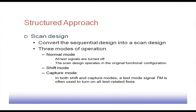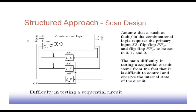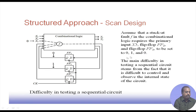The test mode signal Tm is used to turn on the test-related fixes — whatever test is necessary. This is the scan design. Suppose we have a stuck-at fault at point f. To excite this fault f, it may be required that primary input X3, flip-flop FF2, and flip-flop FF3 should be set to 0, 1, and 0 respectively. So X3 should be set to 0, FF2 should be set to 1, and FF3 should be set to 0. This is the test pattern requirement.